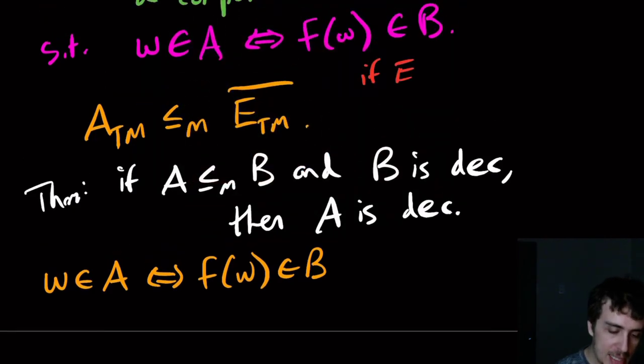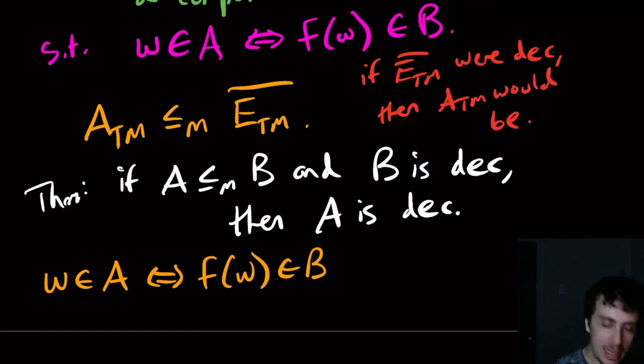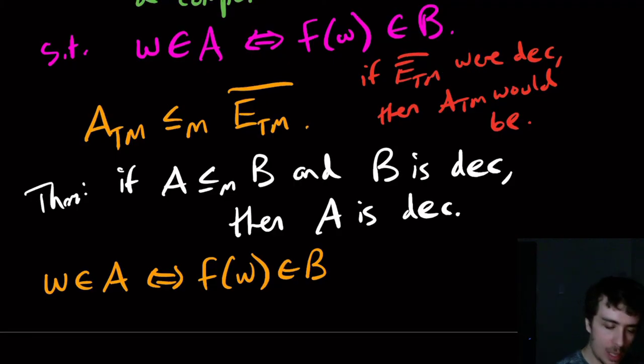So this actually tells us something interesting: that if E_TM complement were decidable, then A_TM would be. And actually that's the reason why E_TM is undecidable, because if it were decidable then A_TM would be, but A_TM as we all know is undecidable at this point.